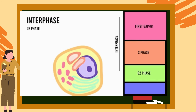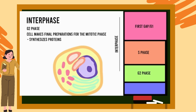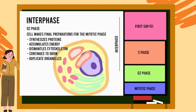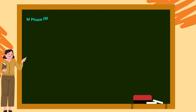Finally, in the G2 phase, the cell makes the final preparations needed before entering the mitotic phase. During the G2 phase, the cell synthesizes more proteins, accumulates energy and dismantles its cytoskeleton to provide resources for the mitotic phase, during which the sister chromatids will be moved around. The cell also continues to grow and duplicate some of its organelles. This is interphase.